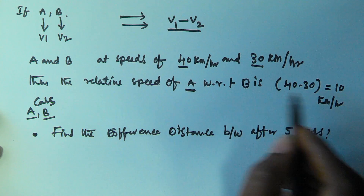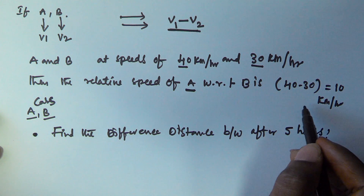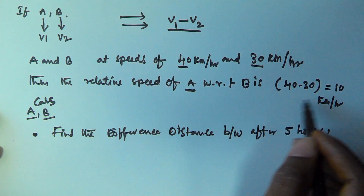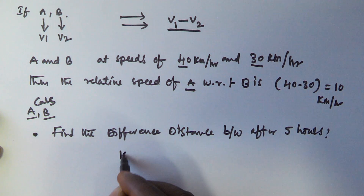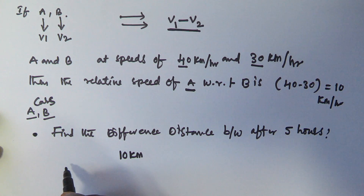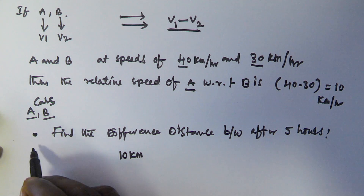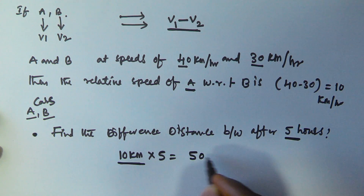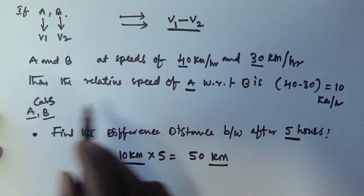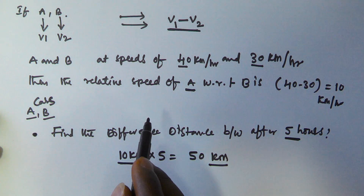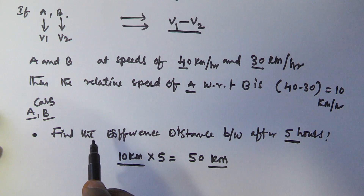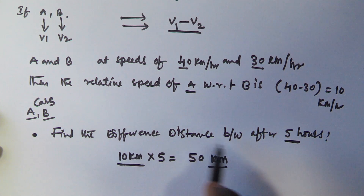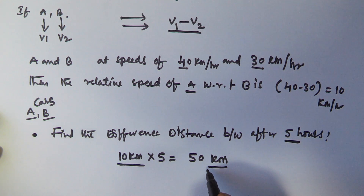The relative speed difference is 10 kilometers per hour, so after one hour the distance between A and B is 10 kilometers. After five hours it is going to be 10 into 5, which equals 50 kilometers. So the distance between both cars after five hours is 50 kilometers. I hope you got this one — thank you very much for watching this video, please subscribe.